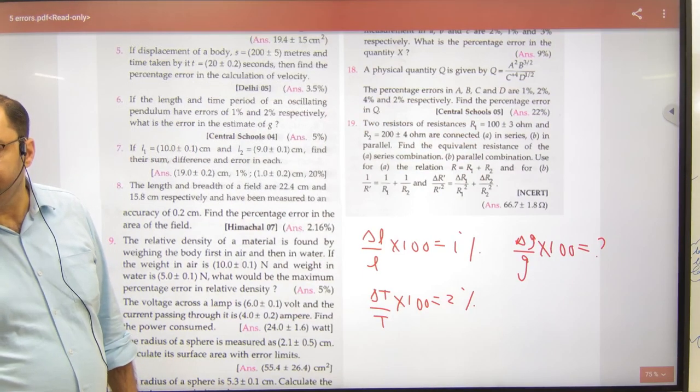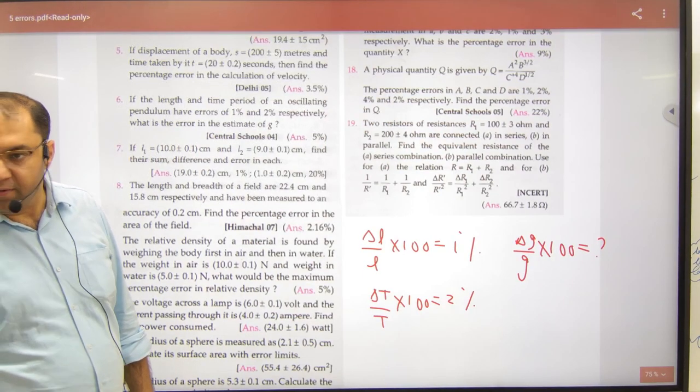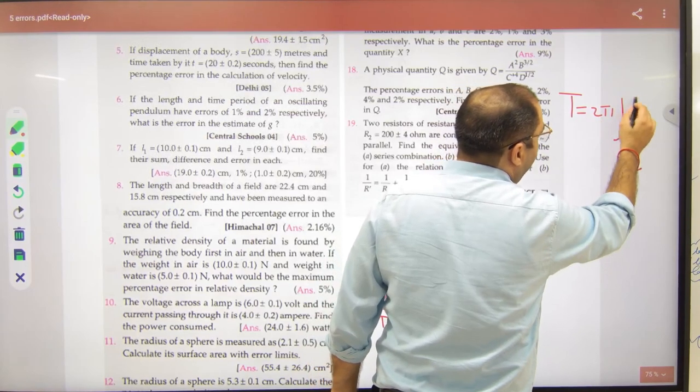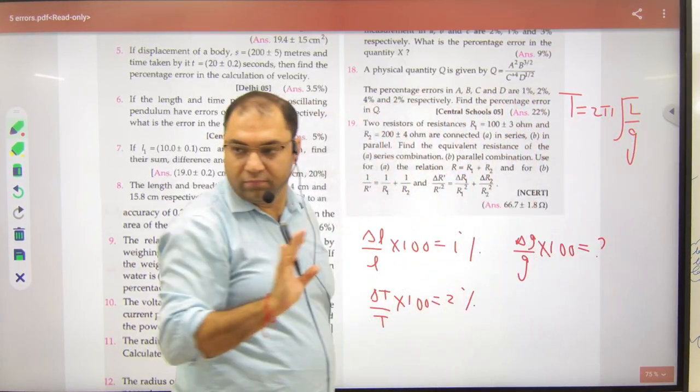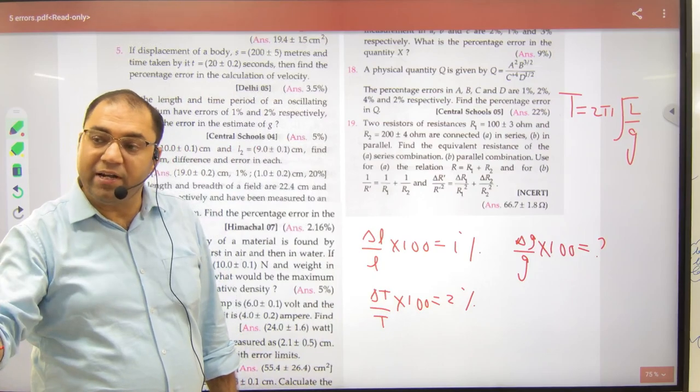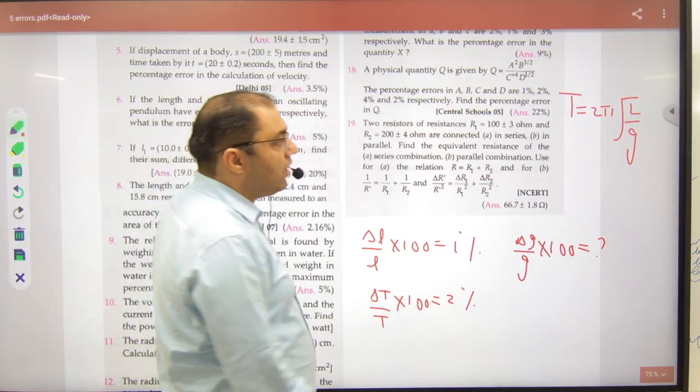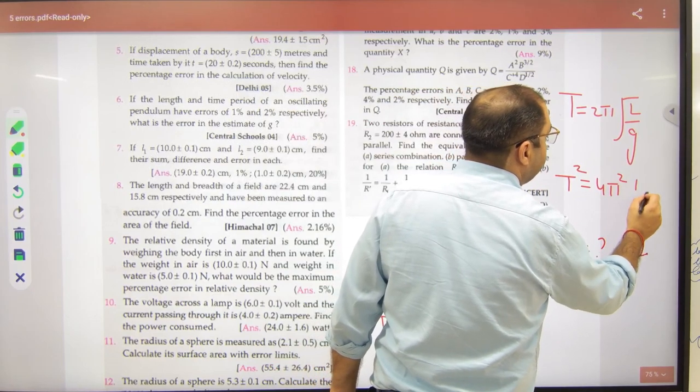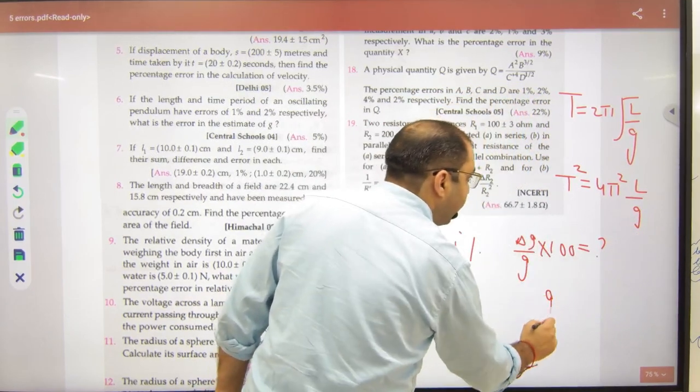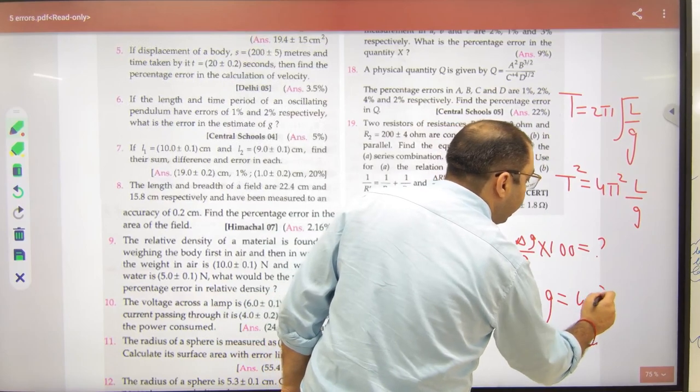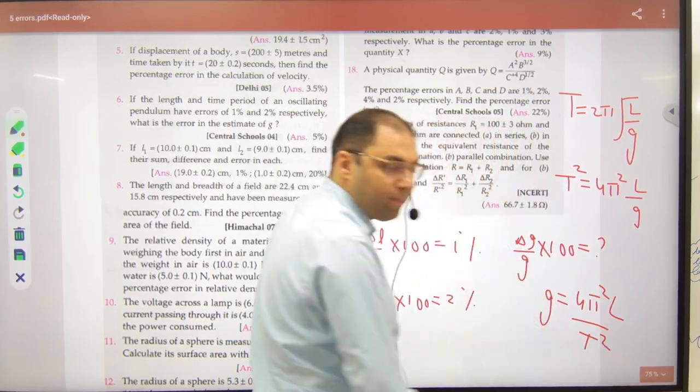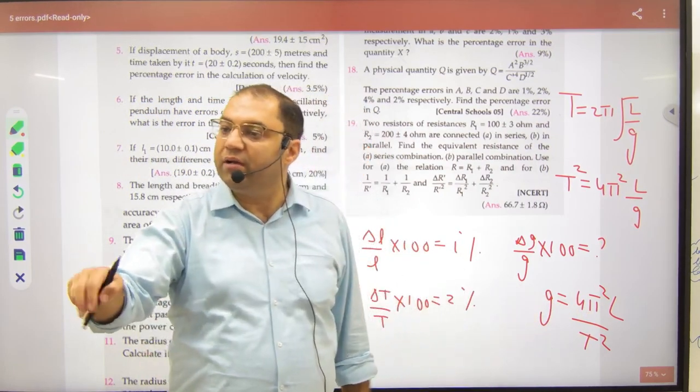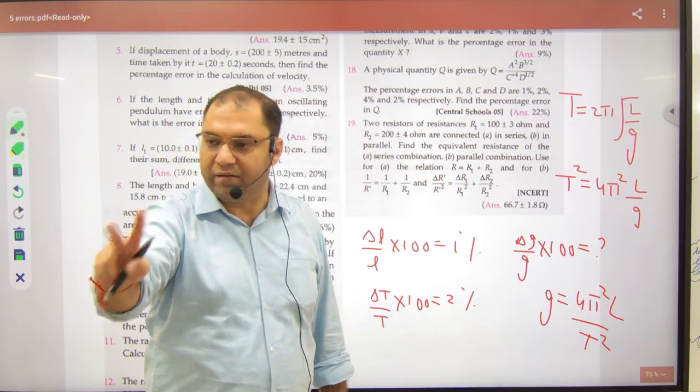Time period formula, we have done the pendulum, t is equal to 2π under root of l by g, we have done the pendulum. When we are squaring, we will have to be squaring, then we will take the distance error. We will take the distance error, after the conversion error, we will take the distance error, now we will take the distance to the distance error, 100 x answer.